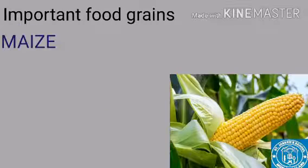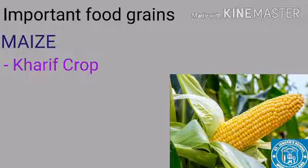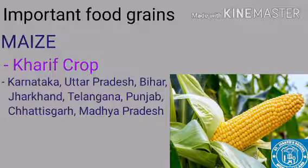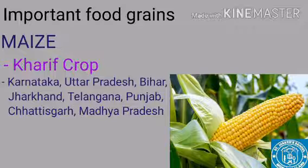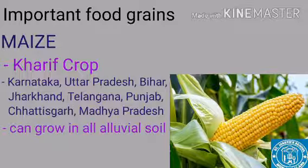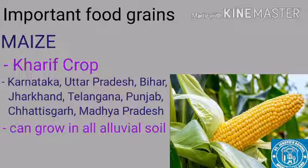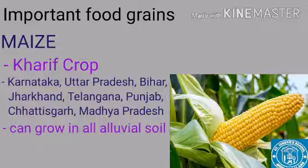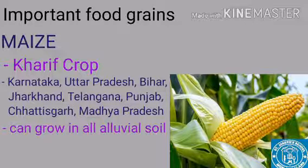The next grain is maize. Maize is a Kharif crop. Areas where maize is cultivated include Uttar Pradesh, Karnataka, Bihar, Jharkhand, Punjab, and Madhya Pradesh. Maize can grow in any kind of alluvial soil and requires a temperature between 21 to 27 degrees Celsius and an annual rainfall of 63 to 115 centimeters. Maize is also grown in parts of Bihar during the Rabi season. Its production has increased with the use of high-yielding varieties, seeds, fertilizers, and irrigation.